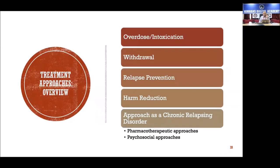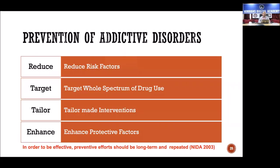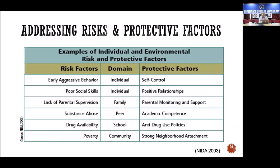For management, the approaches include: managing intoxication and overdose — heavy drinking or opioid overdose; managing withdrawal; preventing relapse; and harm reduction for those unwilling to stop completely. Both pharmacological and psychosocial approaches are available. For prevention, this includes primary prevention in school mental health settings, reducing risk factors, targeting the whole spectrum of drug use, tailoring interventions individually rather than using one-size-fits-all approaches, and enhancing protective factors.